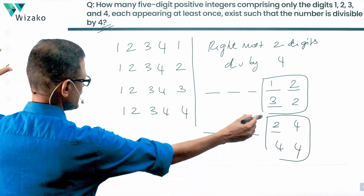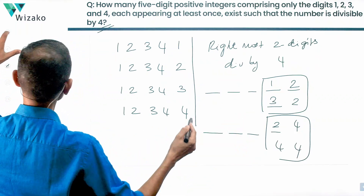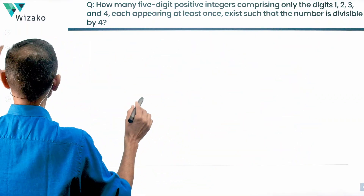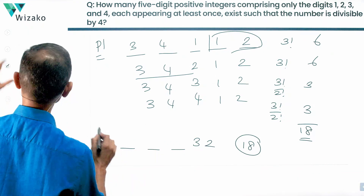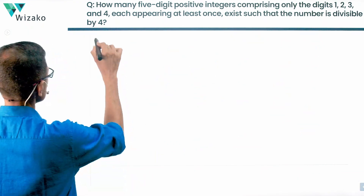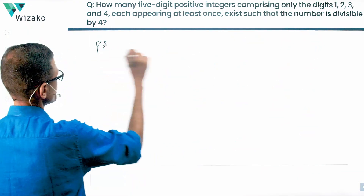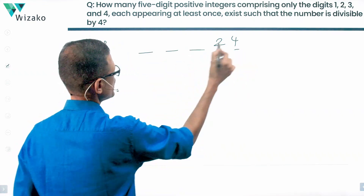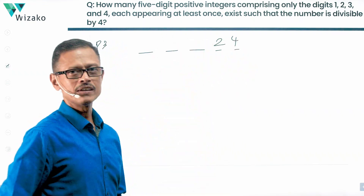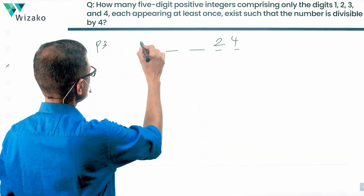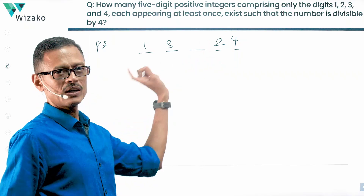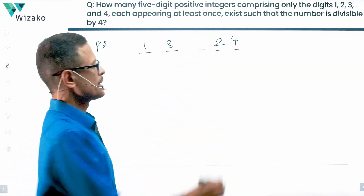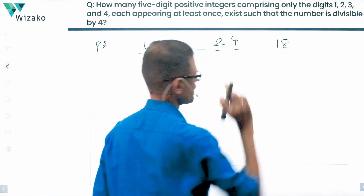Now, what else did we have? We had 24 and 44. For 24 in the last 2 digits, the process is the same — without batting an eyelid. We have 2 and 4 taken care of, so the remaining 3 places take digits from {1,3} plus a repeated digit: {1,3,1}, {1,3,2}, {1,3,3}, {1,3,4}. That gives 18 such possibilities.